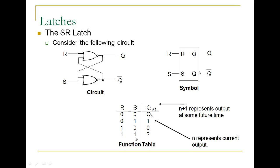When R and S are both one, this is called a racing condition — it is unpredictable and you cannot find out the answer. When both are zero-zero, the earlier state will prevail and remain the same — it holds the value. We are only interested in the two combinations: 0-1 (set) and 1-0 (reset). This is the function table or truth table of the SR latch.